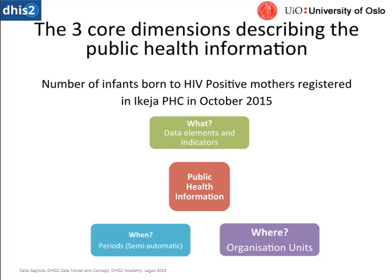The three core dimensions when describing information in DHIS2 — in this case, public health information — are the 'what,' the 'when,' and the 'where.' The 'where' refers to the organization units, which are the hierarchical levels of facilities within districts, districts within provinces, and provinces within a nation. This uses the healthcare model, where facilities collect information and send it up to higher levels.